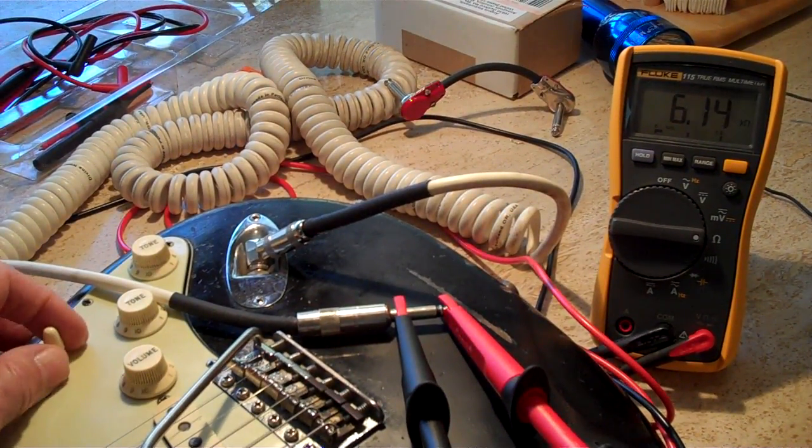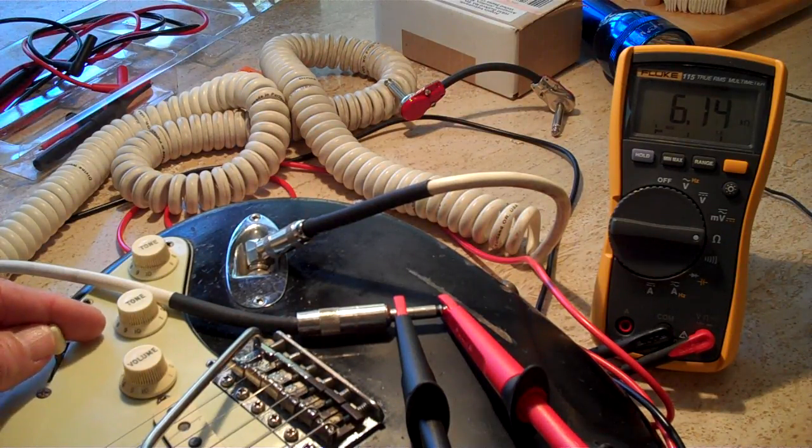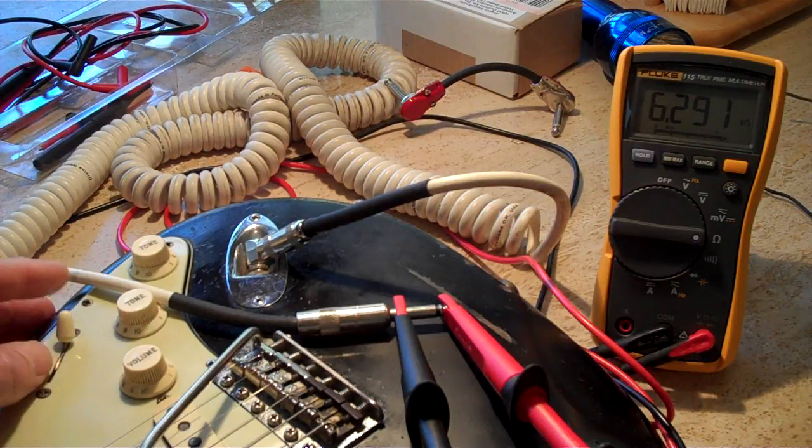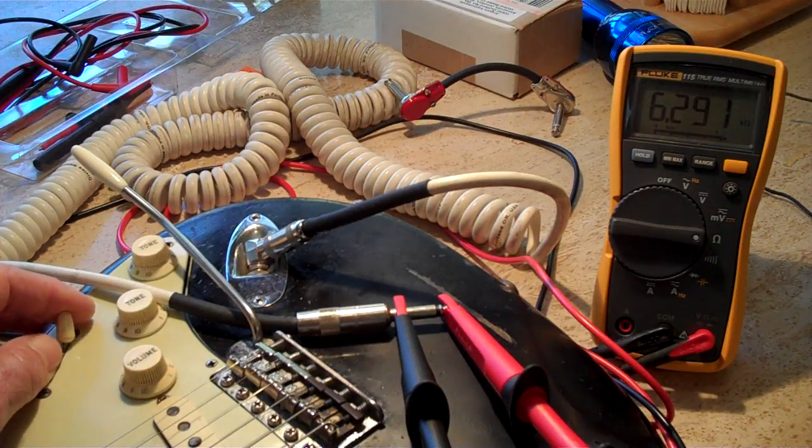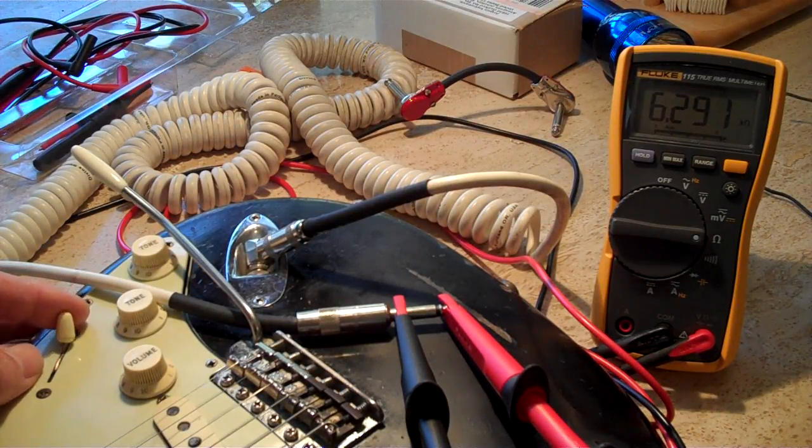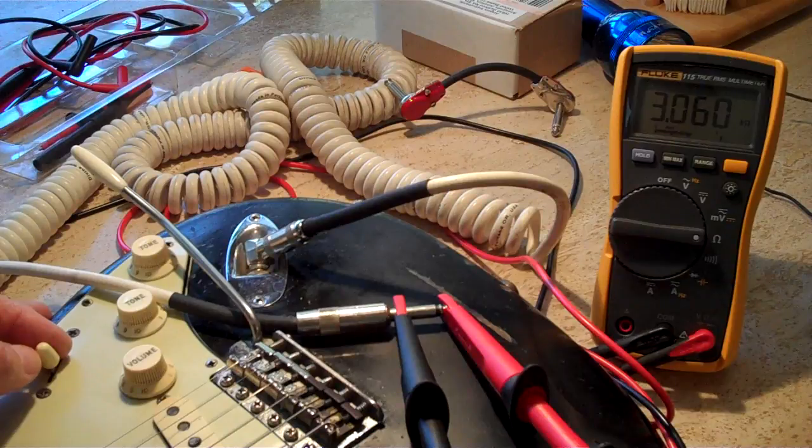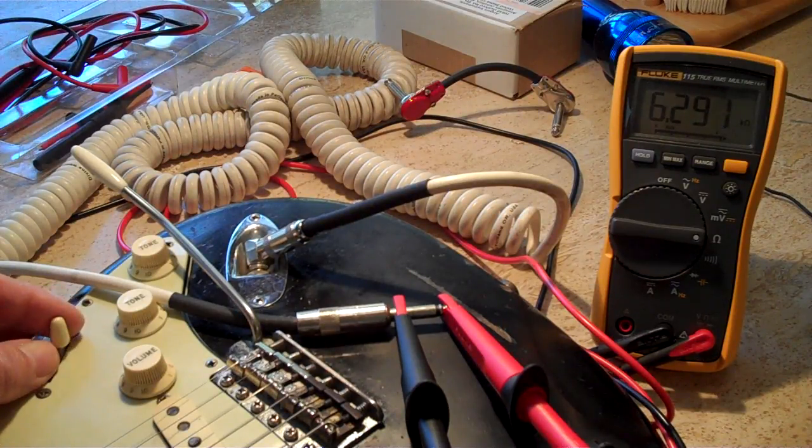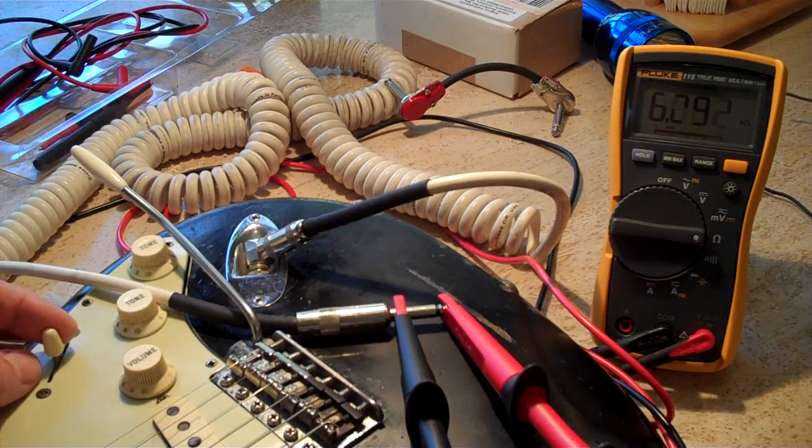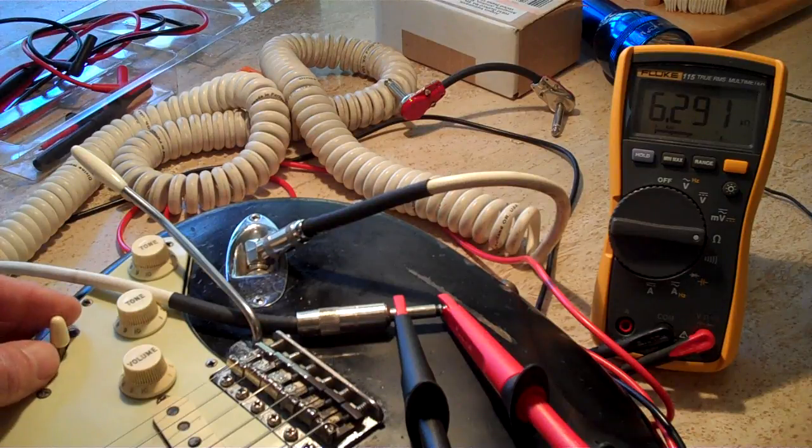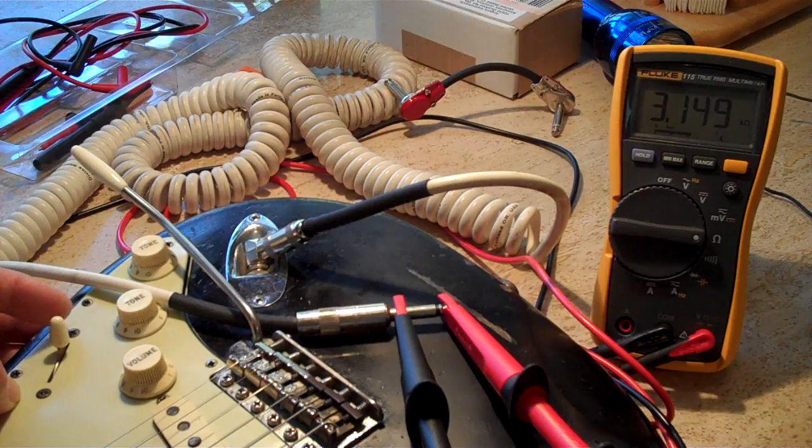Turn it all the way off, it shorts out to 1 ohm. Turn that back up. Middle is still 6.1. I tried to—these were actually matching, the bridge and neck, I mean the neck and middle were matching before I put them in. I'm not sure why the Abigail's a little bit lower than it was reading before it went in. The Rumpel is reading about the same.